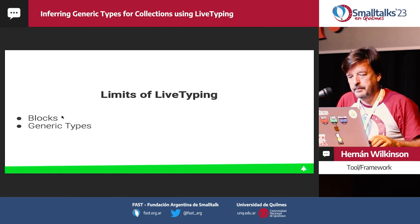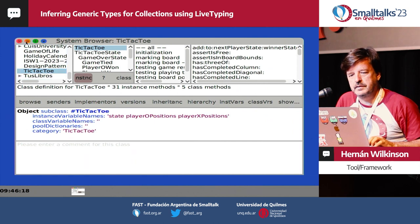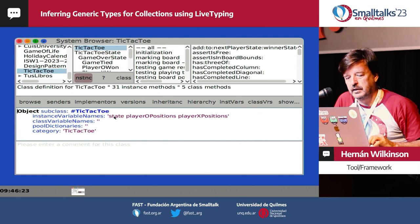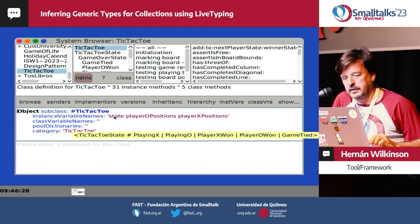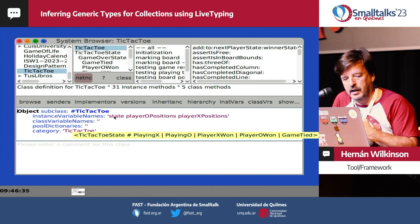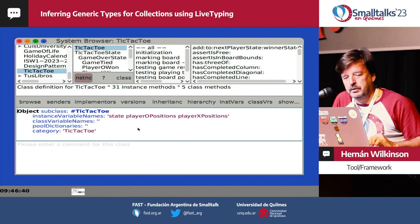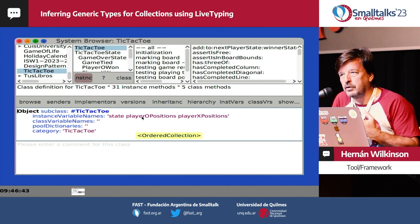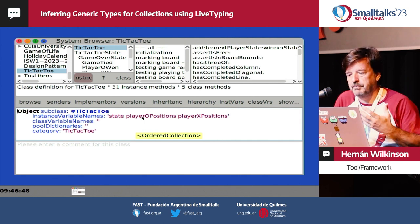What do I mean by generic types? I have an implementation of a tic-tac-toe and a tic-tac-toe has a state. If you put the mouse over there, you can see the types for that variable. In this case, the types could be PlayingX, PlayingO, and so on. All of them have a superclass which is TicTacToeState. But if you put the mouse over the collection, you will see that it's an OrderedCollection — but an OrderedCollection of what? That's the missing part.